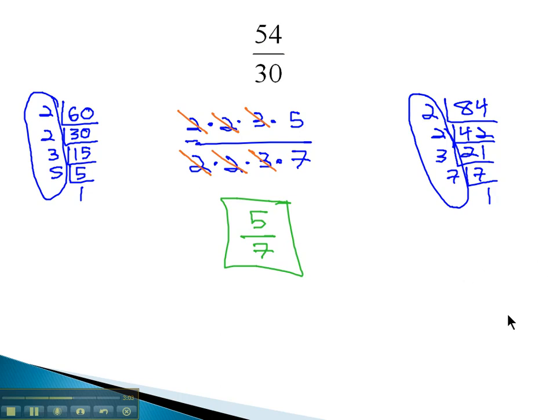So let's take a look at another example, 54 over 30 and see if we can use that shortcut. Instead of finding the prime factorization of 54 and the prime factorization of 30, what we're going to do instead is look at these two numbers and say, can I identify what a common factor that they're both divisible by is? Well, they're both even, so they're both divisible by 2. So let's divide a 2 out of both of them.